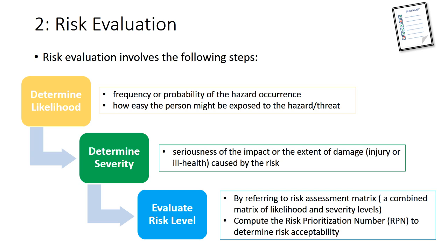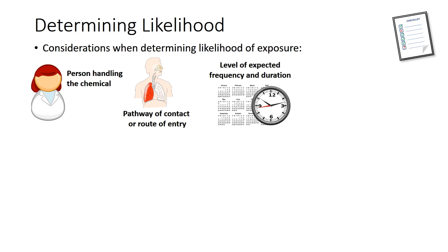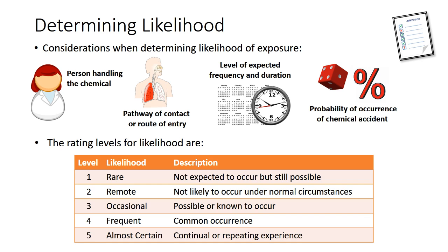The final step is to evaluate the risk level by referring to the risk assessment matrix — a combined matrix of likelihood and severity levels — and compute the Risk Prioritization Number (RPN) to determine risk acceptability. Considerations when determining likelihood of exposure include: the person handling the chemical, pathway of contact or route of entry, level of expected frequency and duration, and probability of occurrence of a chemical accident. These considerations enable laboratory staff to determine likelihood ratings from rare to almost certain, with numeric levels of 1 to 5 respectively, as shown in the table.